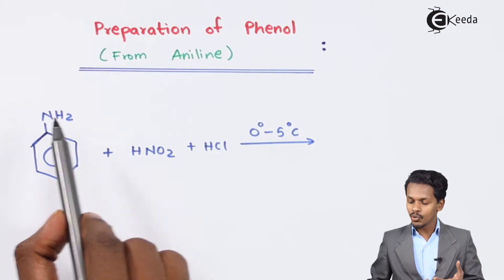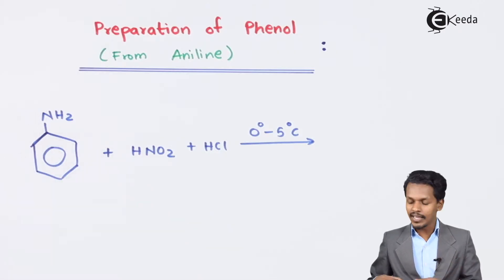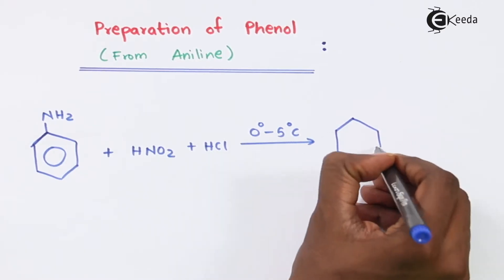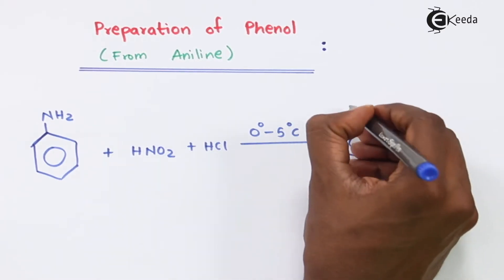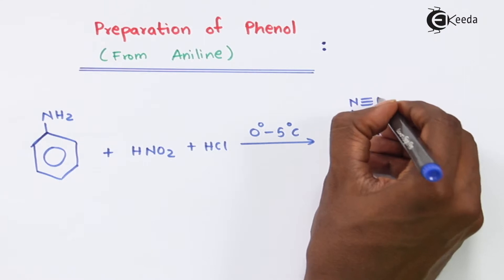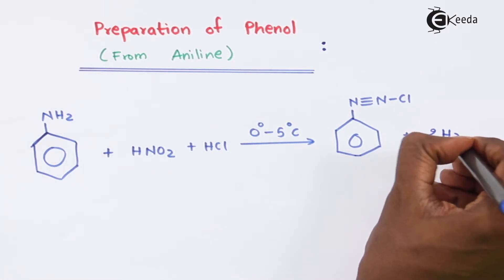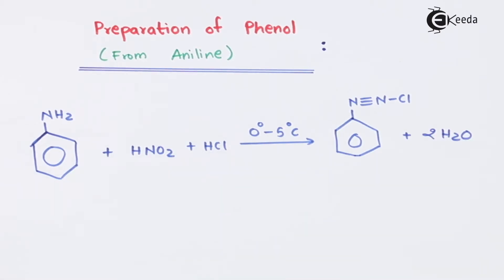Now this amine group, the NH2 group that is present on the benzene ring, will be converted into benzene ring which consists of N triple bond N Cl, plus the by-product that we get is 2 moles of H2O. The product we have obtained in the first step, because obviously it is a two-step process.